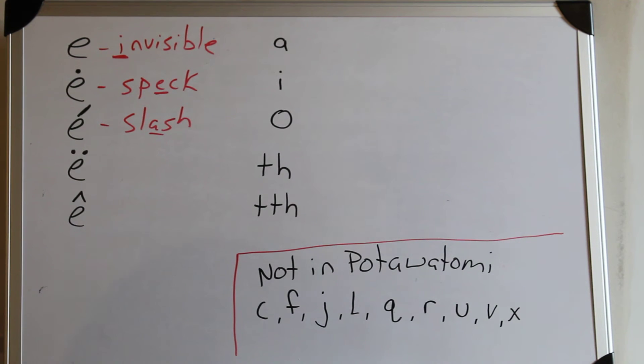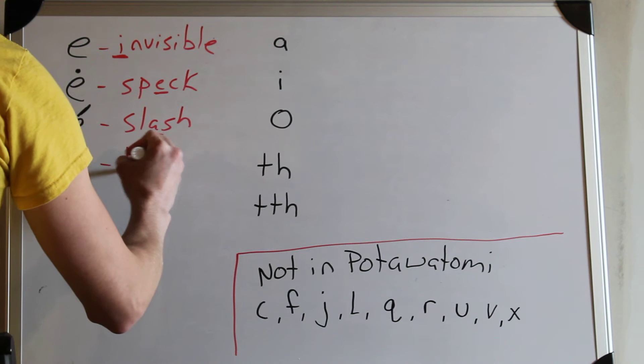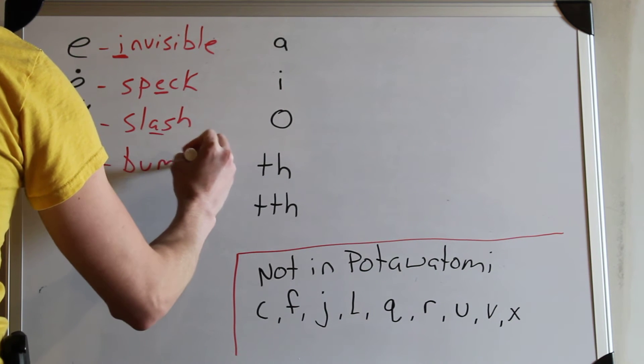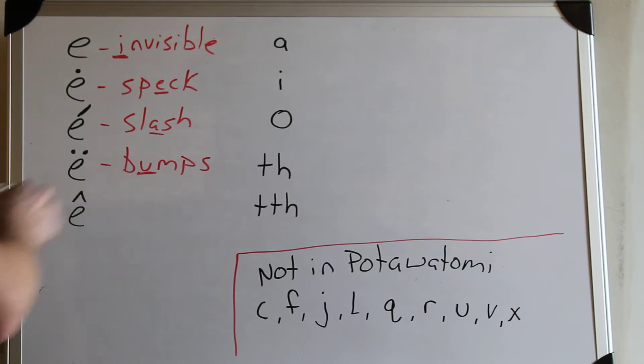The next E we have on here is one with two dots above it. So if you imagine those dots as bumps, that is that sound: uh, uh. The E with two dots make the uh sound.